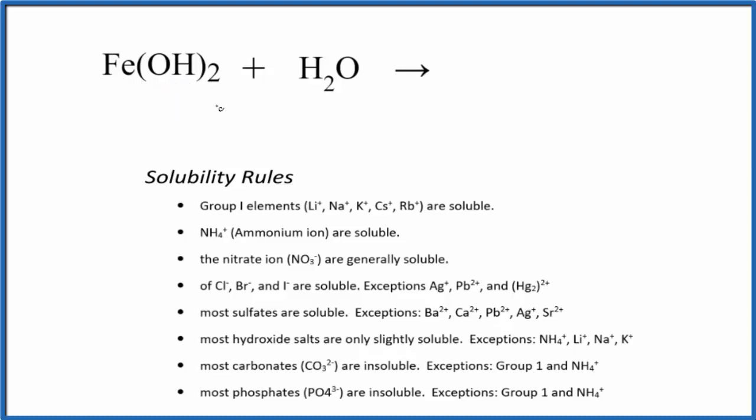Often ionic compounds are soluble, but we should look at the solubility rules here. So as we go down, we're looking for the iron 2 ion or the hydroxide. Here it says most hydroxide salts, like Fe(OH)₂, are only slightly soluble in water, with a few exceptions here.